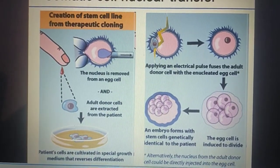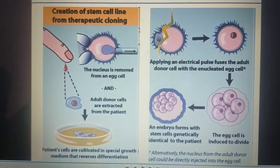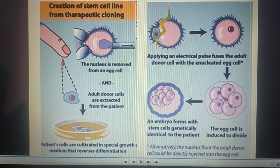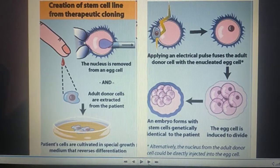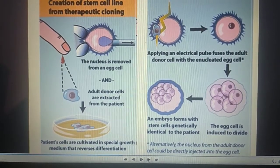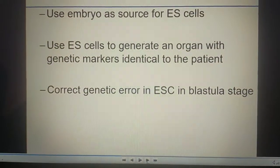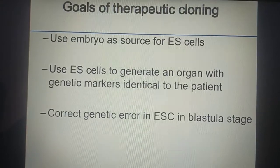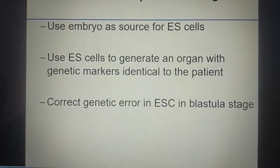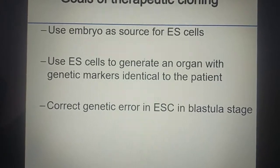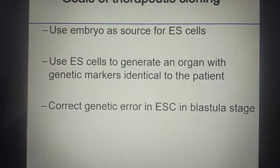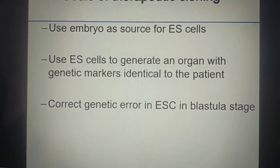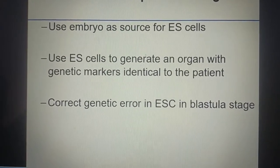In this technique, the nucleus is removed from an egg cell, and adult donor cells are extracted from the patient. The patient cells are then cultivated in a special growth medium that reverses differentiation. The goals of therapeutic cloning include using the embryo as a source for embryonic stem cells, generating an organ with genetic markers identical to the patient, and correcting genetic errors in embryonic stem cells at the blastula stage.